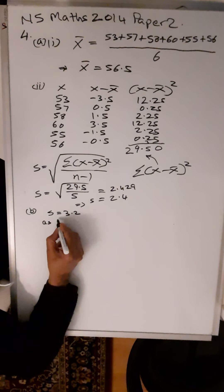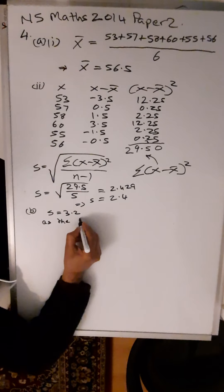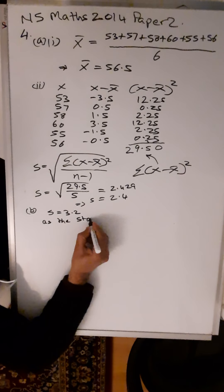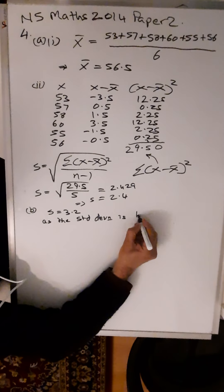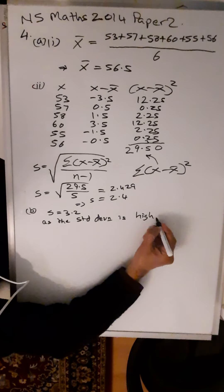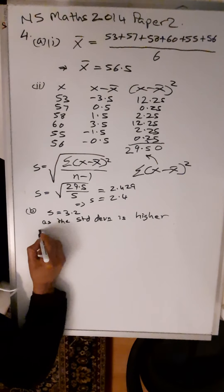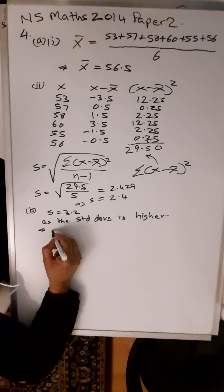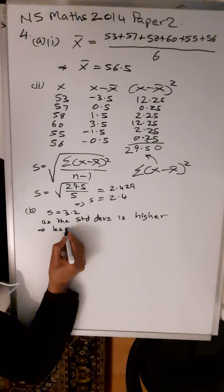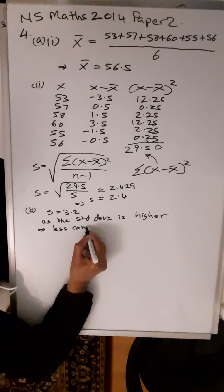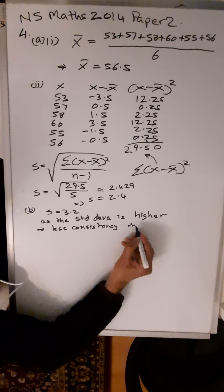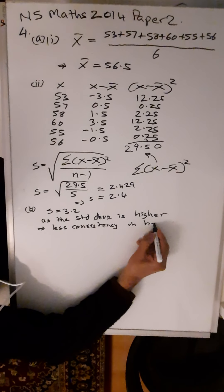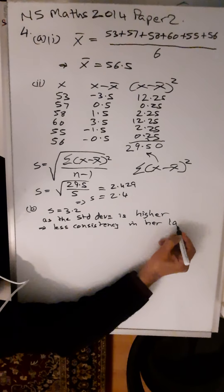Now we're on part B. You're being told that she changes her training routine, hoping to improve her consistency. After this change, she records her times for another six laps. The mean is 55 seconds and the standard deviation is 3.2 seconds. Has the new training routine improved her consistency? Give a reason for your answer. This is just for one mark.